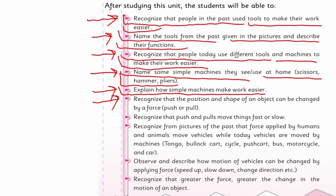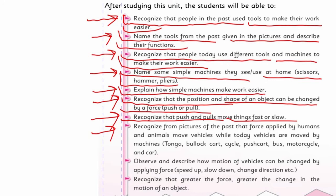And the sixth SLO is to recognize that the position and shape of an object can be changed by force - push or pull. SLO number 7: To recognize that push and pull move things faster or slower.